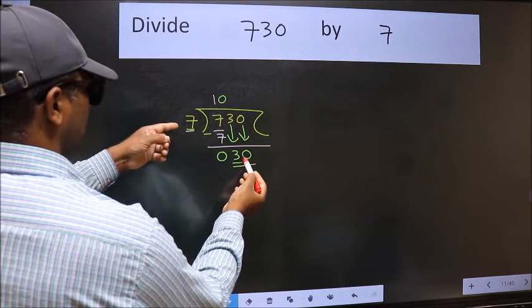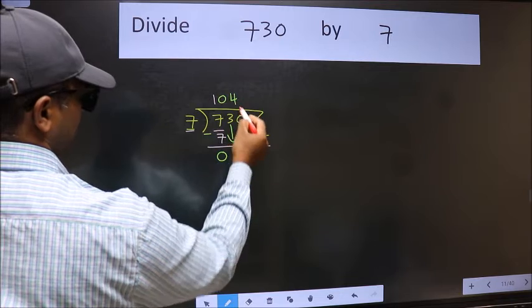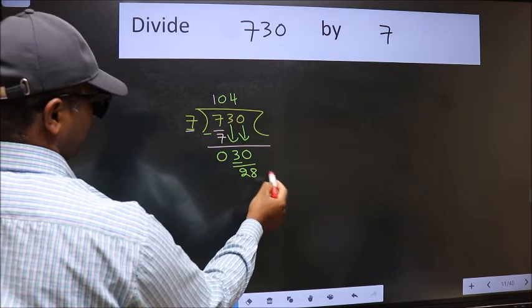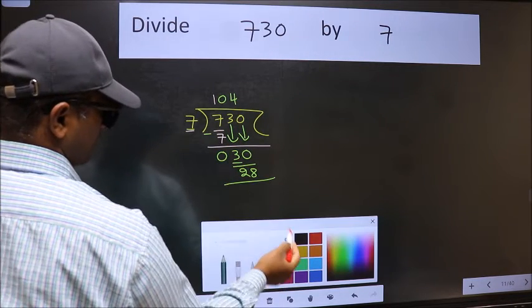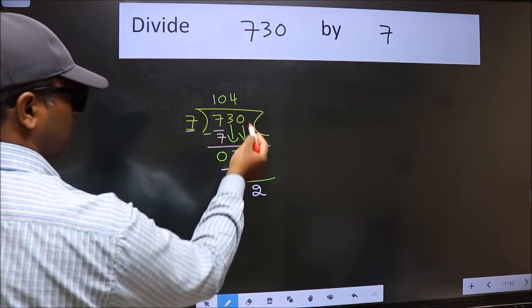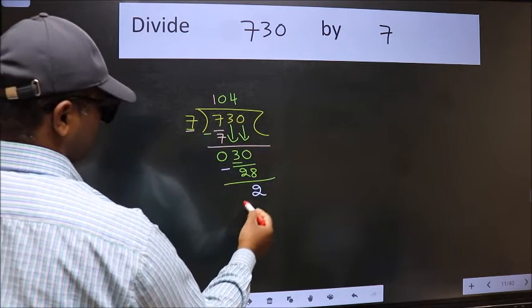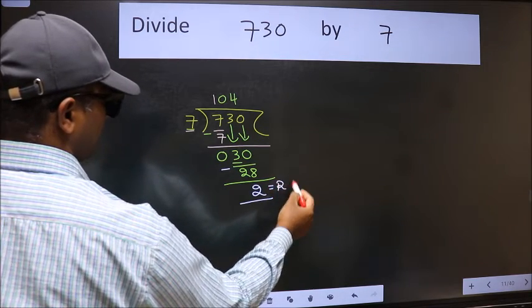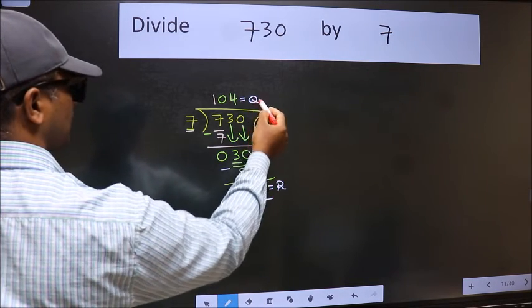A number close to 30 in 7 table is 7 fours 28. Now we should subtract. We get 2. No more numbers to bring it down, so we stop here. This is our remainder and this is our quotient.